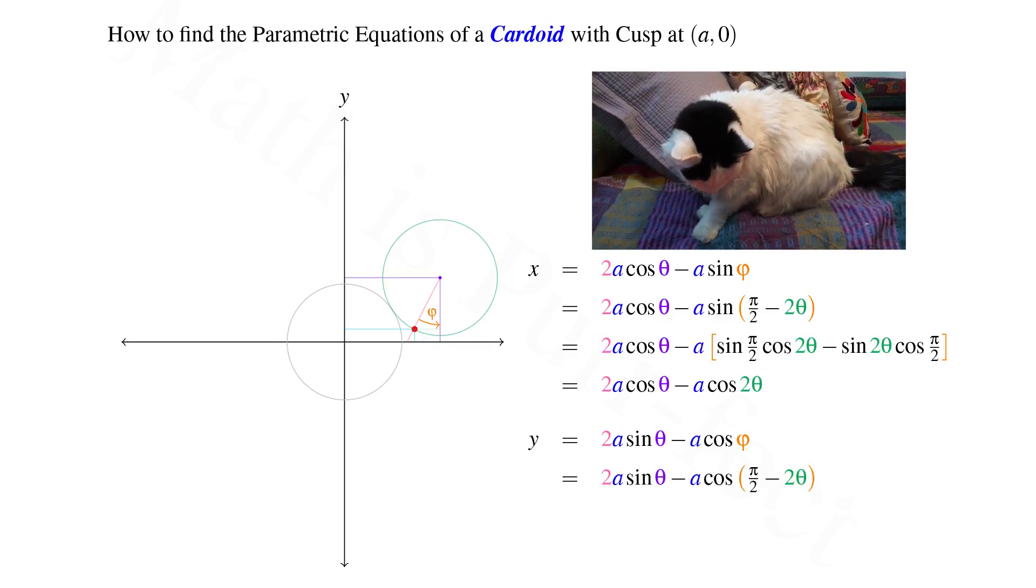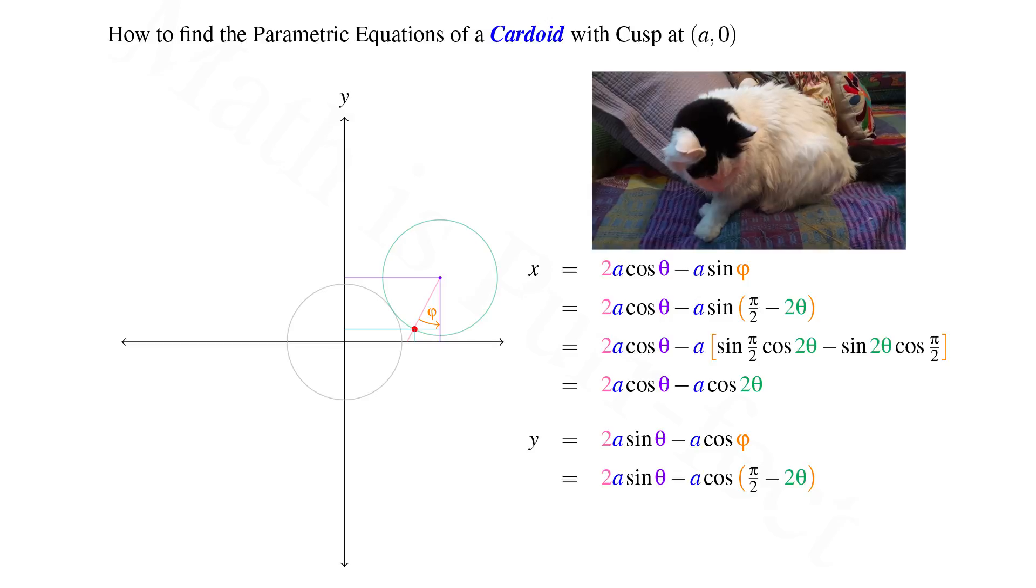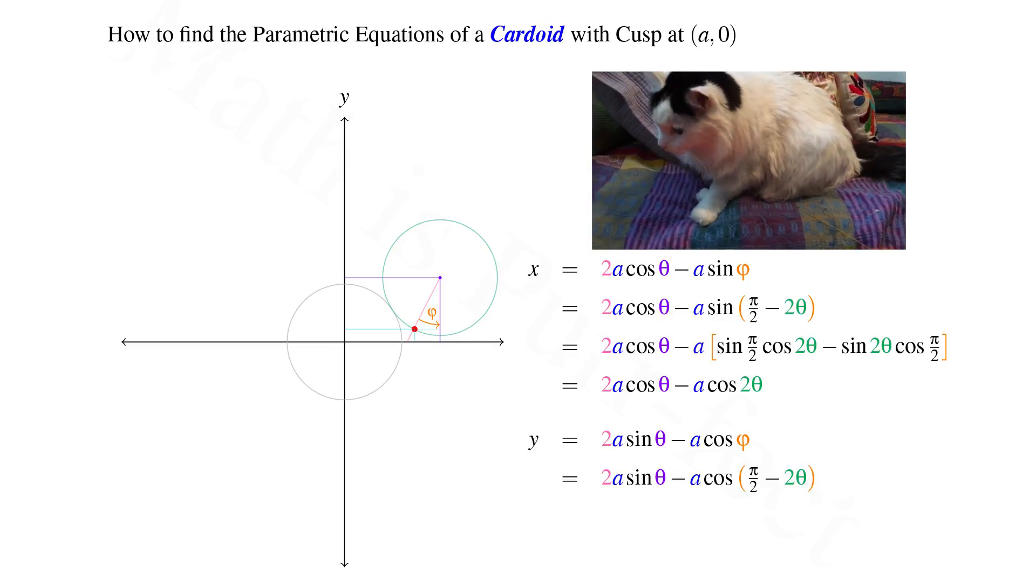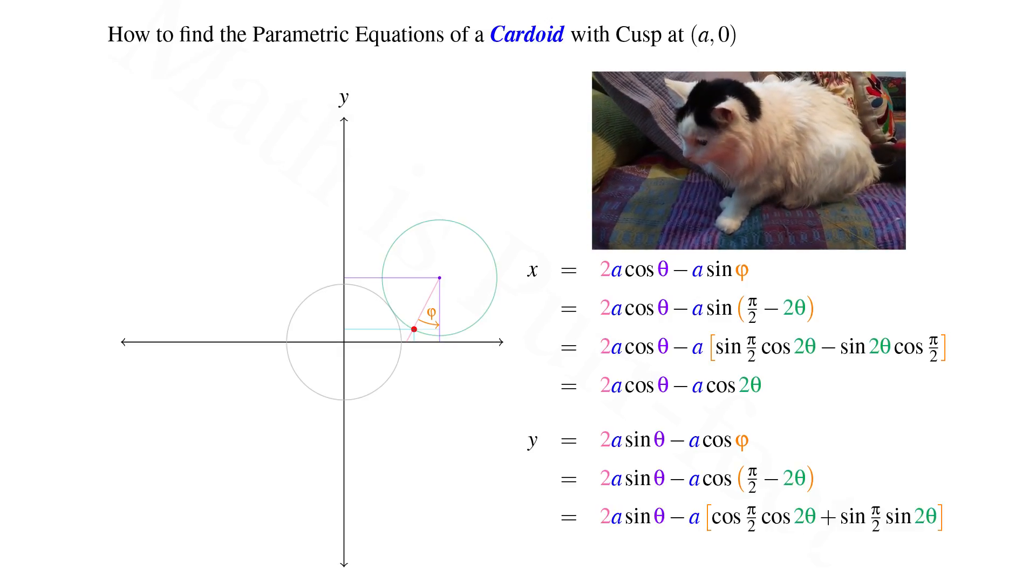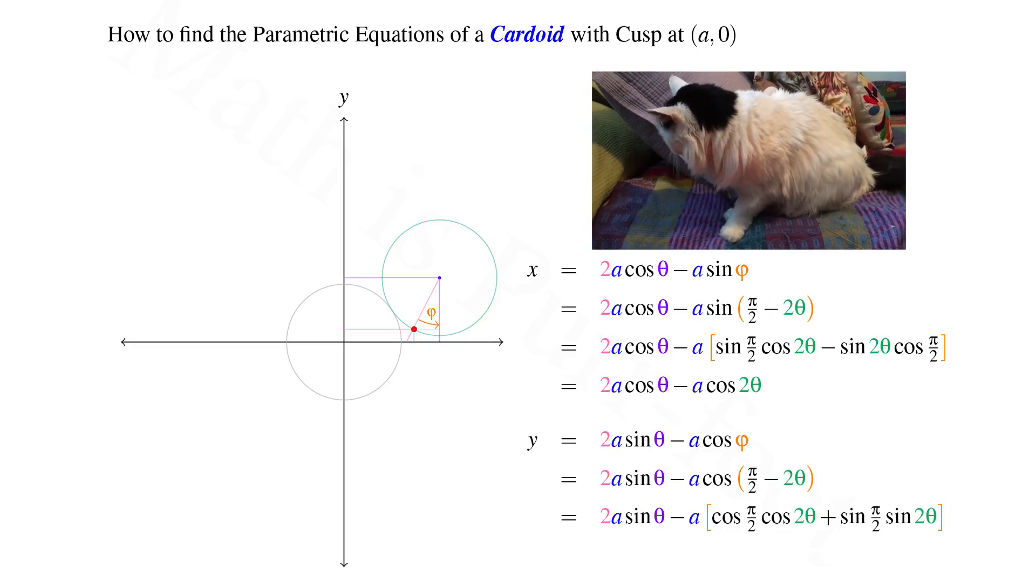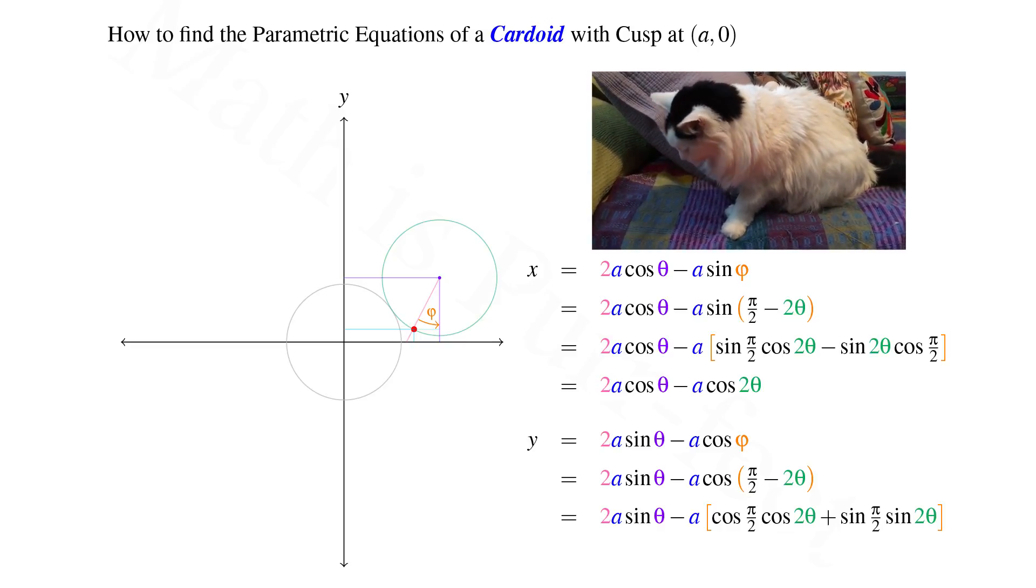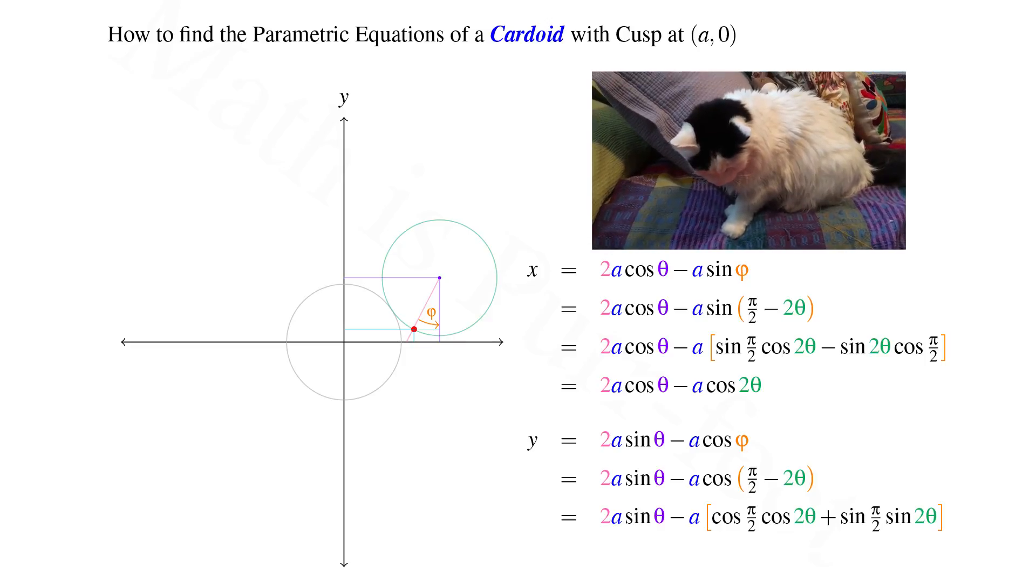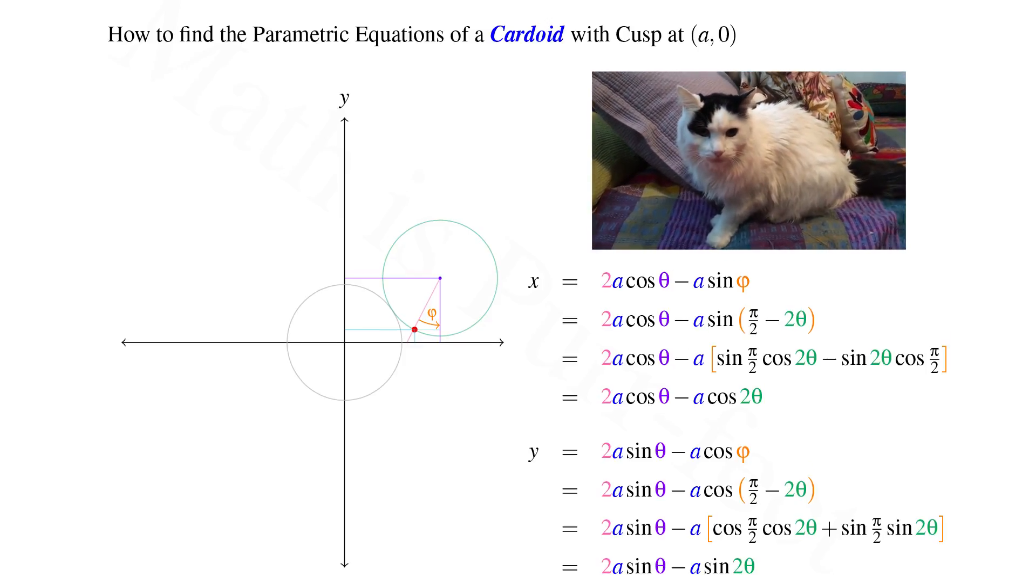Once again, noting that phi is equivalent to pi over 2 minus 2 theta, we expand the term with cosine as cosine pi over 2 cosine 2 theta plus sine of pi over 2 sine 2 theta. Once again, sine of pi over 2 goes to 1 as cosine of pi over 2 goes to 0.